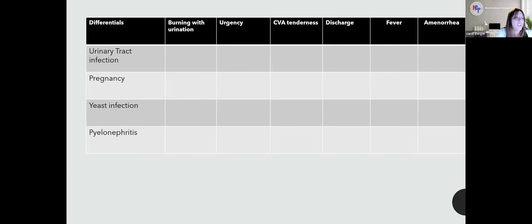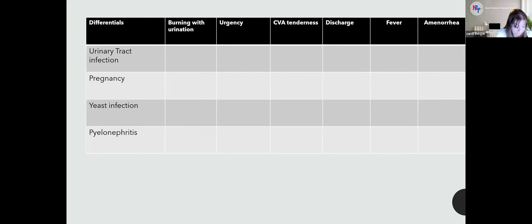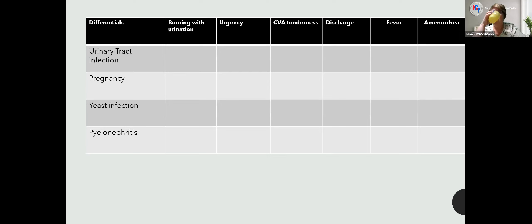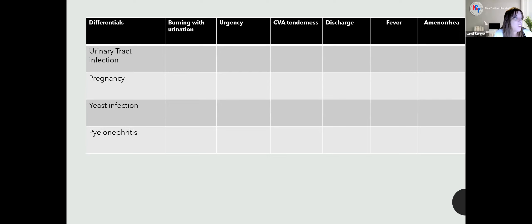Further-out differentials would be interstitial cystitis, overactive bladder, and chlamydia — since they've been inconsistent with condoms, you could consider the STI factor. Trichomonas is also possible. Another case I recently saw in a young woman was urinary retention — 900 cc's from a back injury, found on MRI. So there are more complicated cases out there.